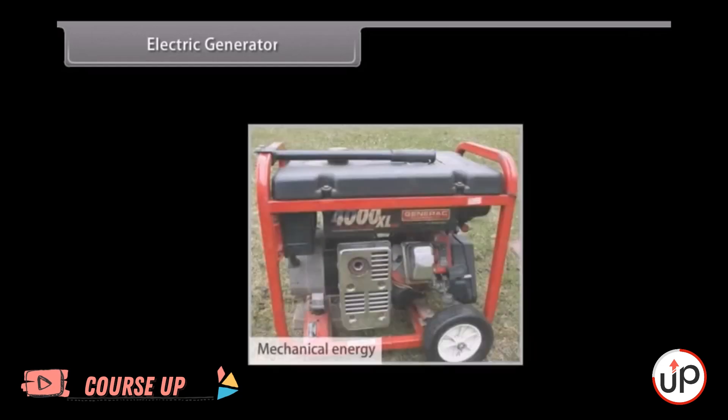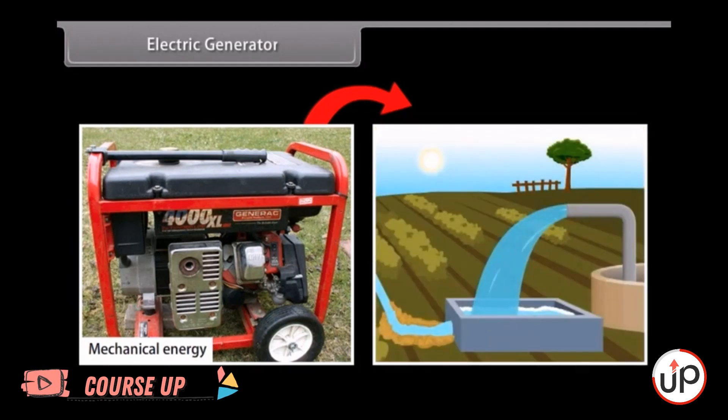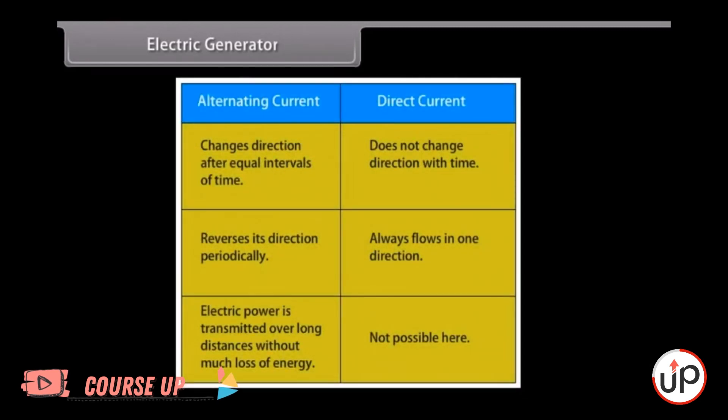Electric generator. An electric generator converts mechanical energy to electrical energy. It forces electrical charge to flow through an external electrical circuit. Examples include a water pump which causes water to flow but does not create water. Electric generators operate based on electromagnetic induction. Whenever a conductor moves to a magnetic field, a current is induced in this conductor. If a magnet is spinning inside a coil, alternating current is induced in the coil. Alternating current changes direction after equal intervals of time. The other type of current is direct current, which does not change direction with time.